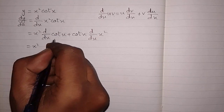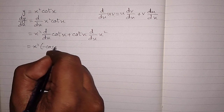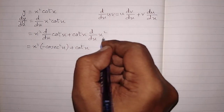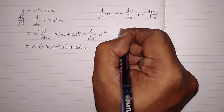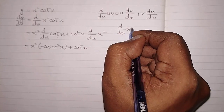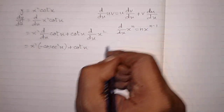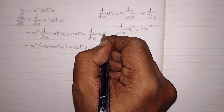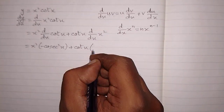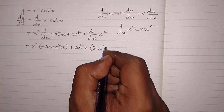Now we have x² and the derivative of cot(x) is −csc²(x), plus cot(x). For the derivative of x² we use the power rule: dy/dx of xⁿ = n·x^(n−1). With n = 2, we write 2 in place of n and x to the power 2−1.